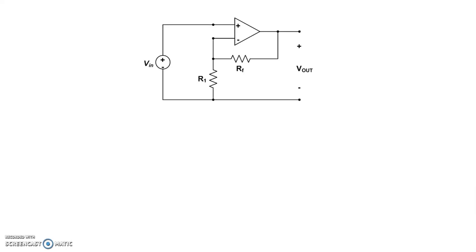In the last video we saw an op-amp in the inverting amplifier configuration. So let's take a look at an op-amp that's wired a little differently. If you take a look at this particular op-amp, you do see that it has negative feedback because there's a resistor RF between the output node and the inverting terminal of the op-amp.